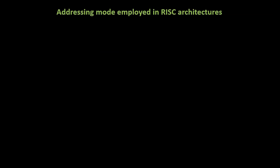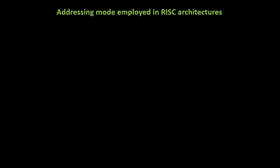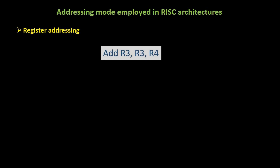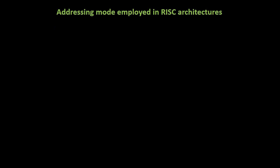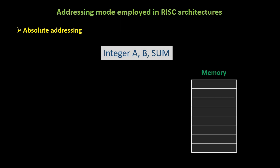Now let's take a closer look at each addressing mode employed in RISC architectures. The first addressing mode is immediate addressing. It explicitly specifies the operand in the instruction itself, such as in the instruction ADD R4, R2, #200. ADD R4, R2, #200 adds 200 to the content of R2 and stores the result in R4. The second addressing mode is register addressing. It describes the registers holding the operands. Consider the instruction ADD R3, R3, R4 — it adds the content of R4 to the content of R3 and stores the result in R3. Next, we have absolute addressing. This mode uses a name to represent a memory location, typically used for declaring global variables in a program. For instance, the instruction integer A, B, sum allocates memory for variables A, B, and sum.